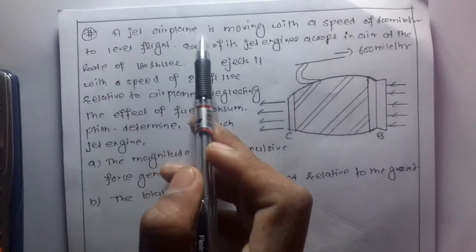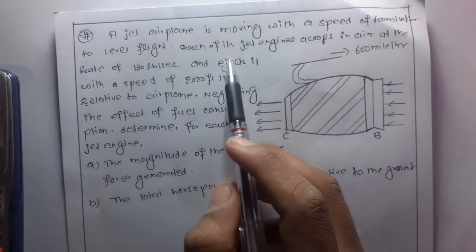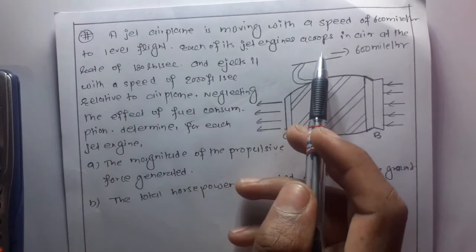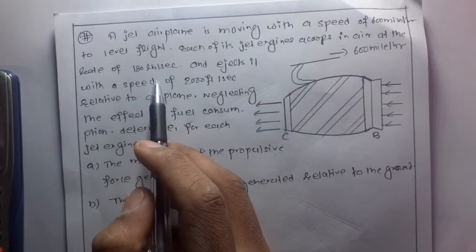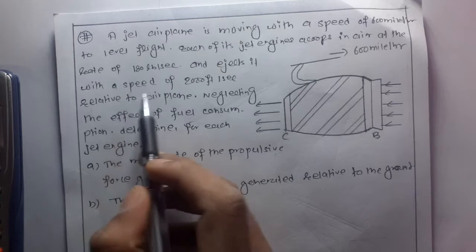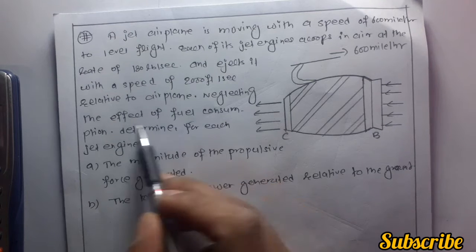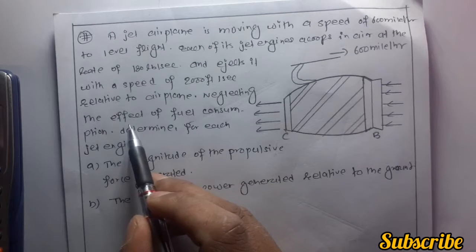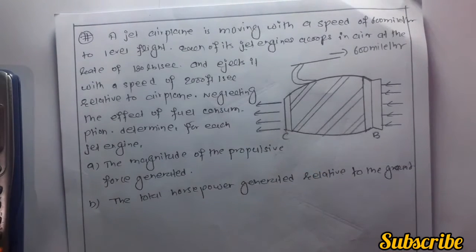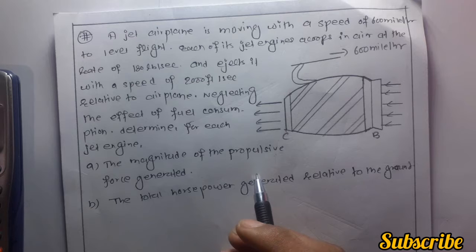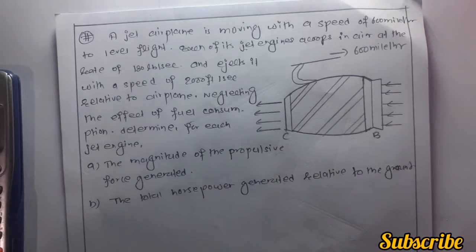A jet airplane is moving with a speed of 600 mph in level flight. Each of its jet engines scoops in air at a rate of 180 lb per second and ejects it with a speed of 2000 feet per second relative to the airplane. Neglecting the effect of fuel consumption, determine for each jet engine the magnitude of the propulsive force generated and the total horsepower generated relative to the ground.